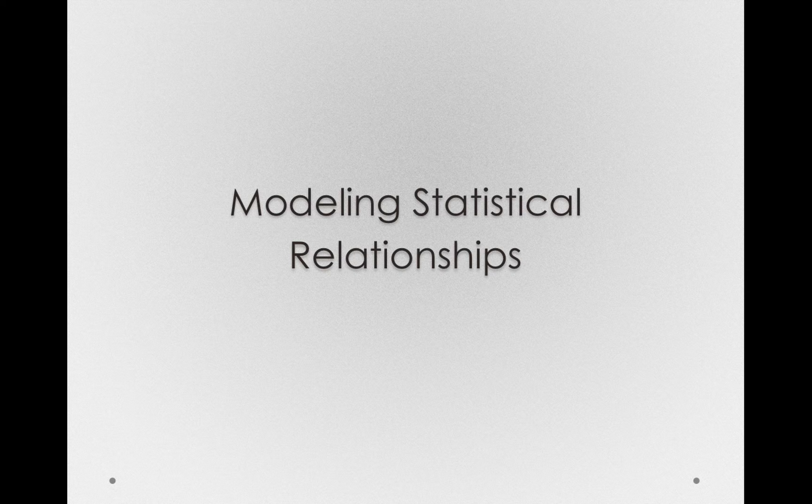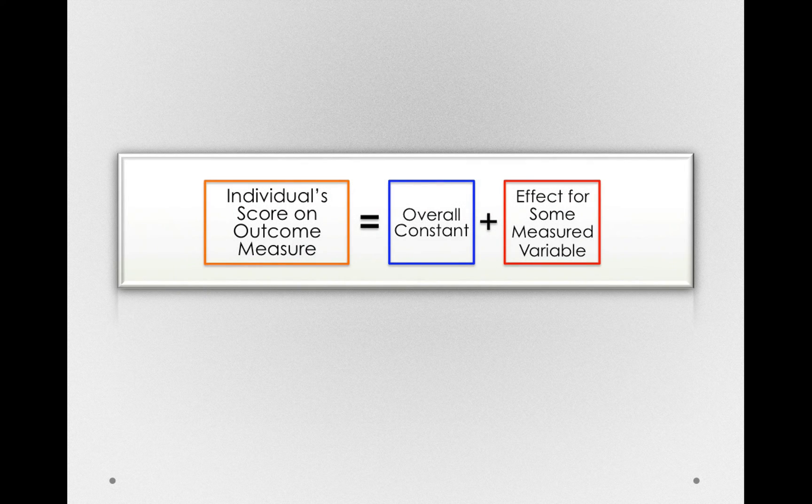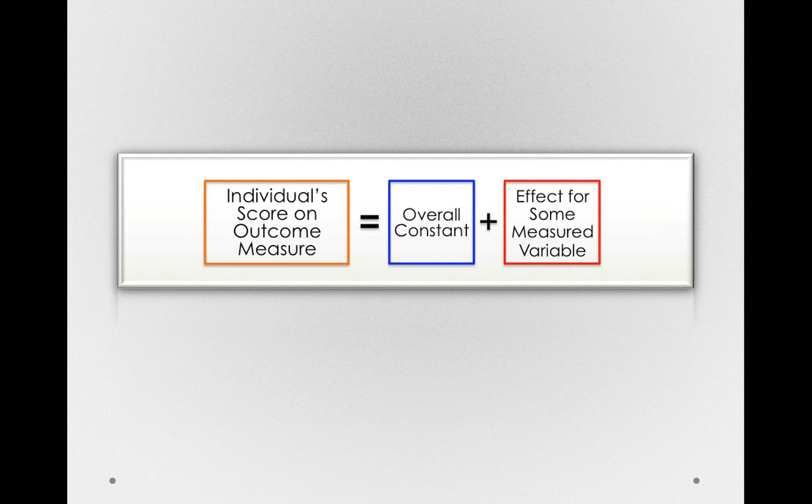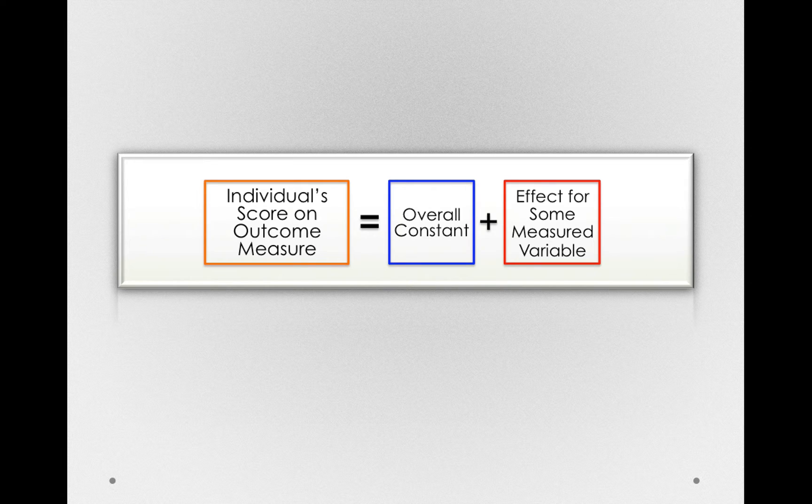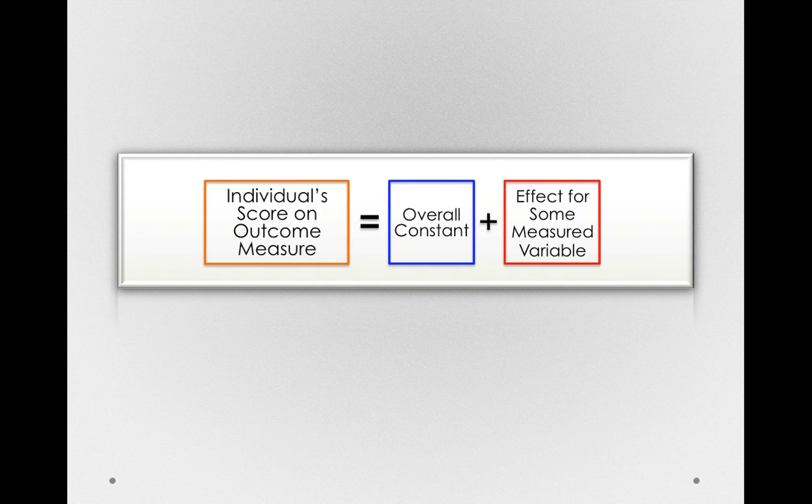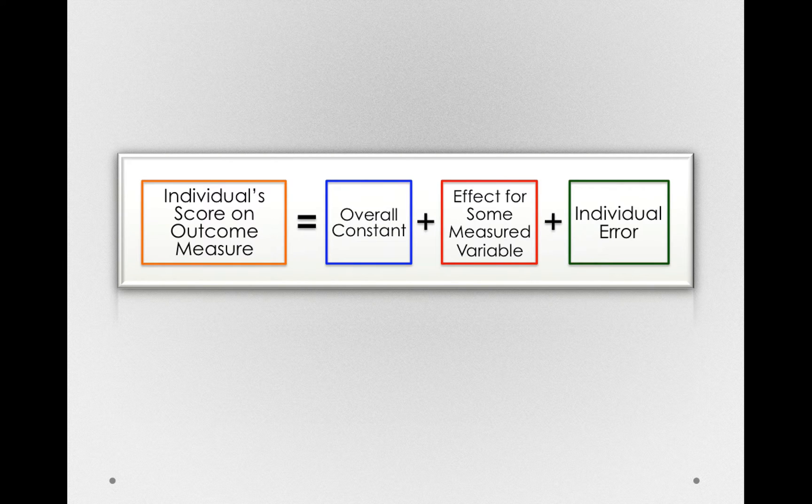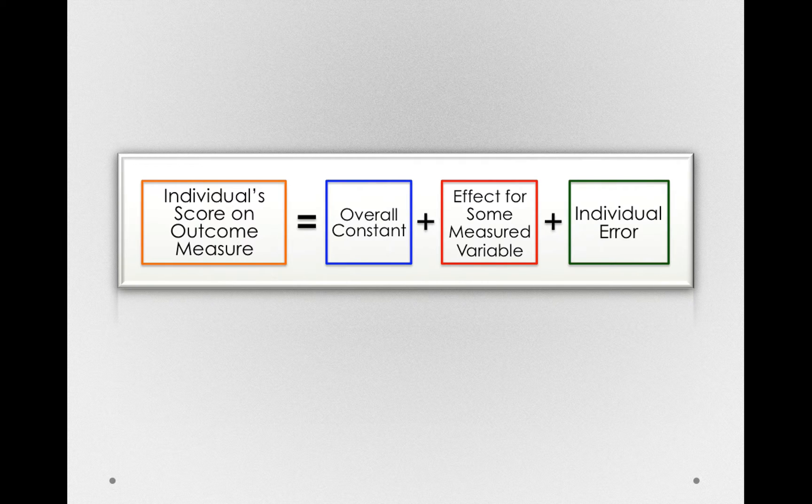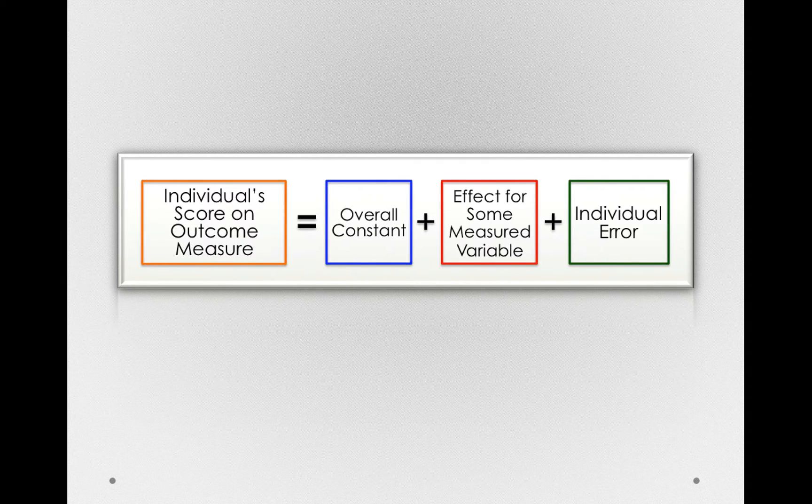Statistical models will add one additional component to our model that we've seen so far. Because so far, we've actually been able to perfectly represent individual scores on the basis of explanatory variables. But for statistical models, we'll add in an additional component, individual error. This individual error will reflect the sum, or the total, of all the other things we didn't measure.